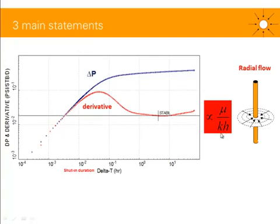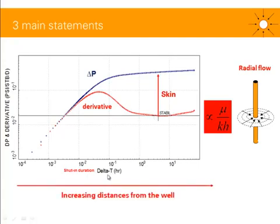Second main statement: the vertical separation between your stabilization and the delta P plot — between the two plots — is indicative of the skin or the damage in the well. A higher separation would mean higher skin; lower separation, lower skin. Third statement: your shut-in duration, or delta T, could be replaced by delta R, the radius from the well. So as delta T increases, you increase the distance from the well. Small delta T means you are looking near the wellbore.